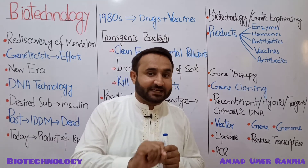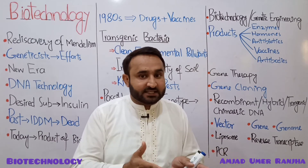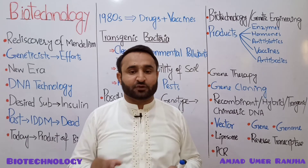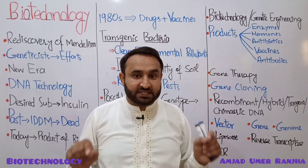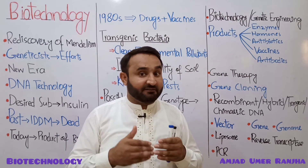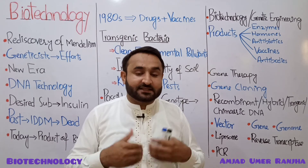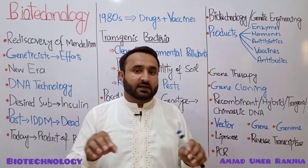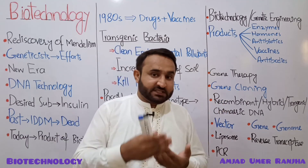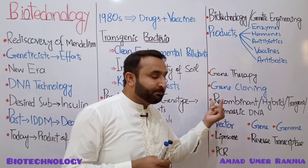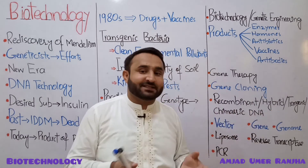Gene cloning: the word cloning means to produce genetically identical copies. In cloning, copies can be made of a gene, a cell, or an entire living organism. Cloning means producing genetically identical copies by asexual means. Gene cloning means producing identical copies of a gene. Gene cloning has two methods: recombinant DNA technology and PCR.